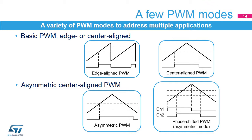A variant of center-aligned mode is the asymmetric PWM mode, where two compare registers define the turning on and off of the PWM signal, providing higher resolution for pulse-width setting since turn-on and turn-off times are individually defined. It also allows generation of phase-shifted PWM signals necessary to drive DC-to-DC converters based on the full-bridge phase-shifted topology, providing two PWM signals with identical frequency, 50% duty cycle, and a phase shift varying from 0 to 180 degrees.